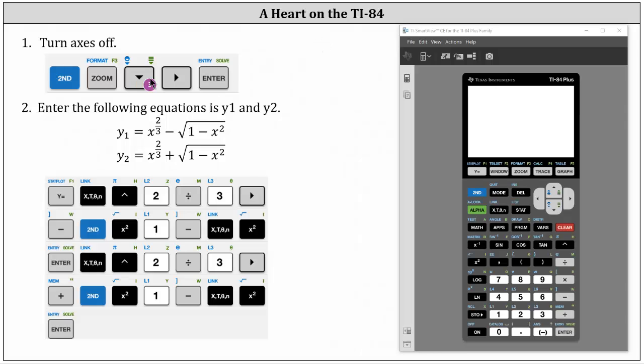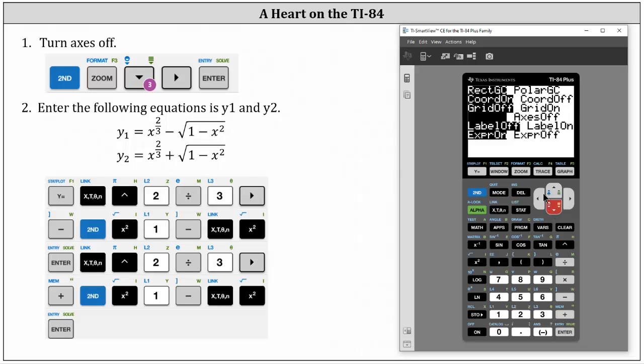The keystrokes are shown here. We press second, zoom, arrow down three times, right arrow once, and press enter on axis off.